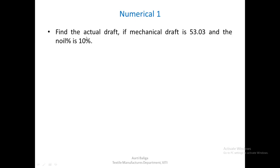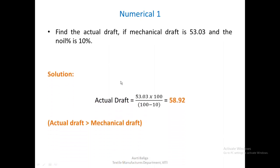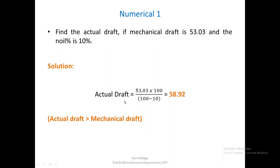For the first draft problem: find the actual draft if the mechanical draft is 53.03 and noil is 10 percent. Using the formula: actual draft equals 53.03 multiplied by 100 divided by (100 minus 10). The actual draft comes out to be 58.92. As expected, this value is more than the mechanical draft, since on the Comber the actual draft is always more than the mechanical draft.